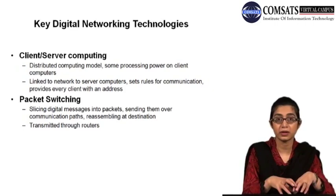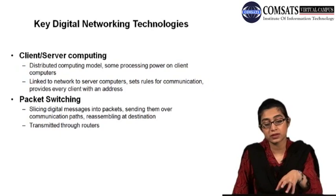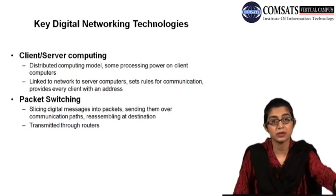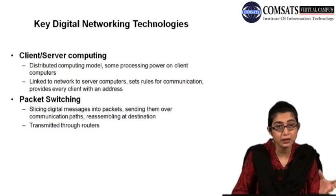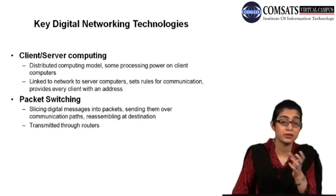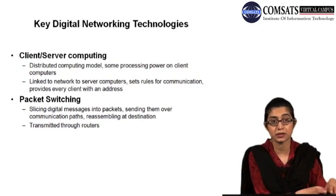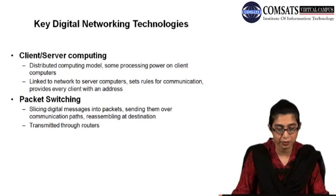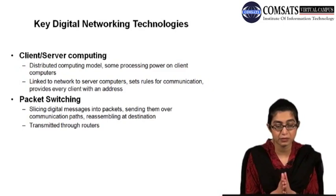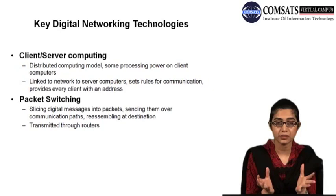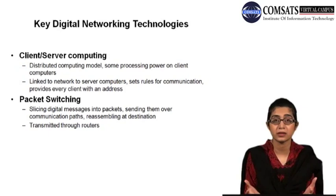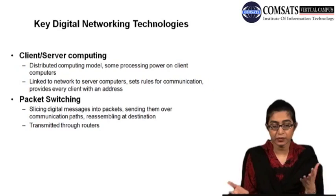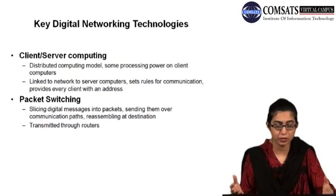All client computers are linked with the help of a network to the server computers. Those server computers set rules for the communication and also provide each client with its own distinct address — that address is called an IP address. Every client computer in a network has an IP address, so that if communication needs to be directed to a certain computer, it can be done with the help of the IP address. In the client-server model, the network operating system is placed on the server, and there can be multiple servers — a web server, a file server, any kind of storage server that is required.